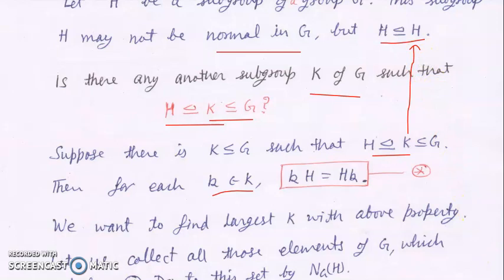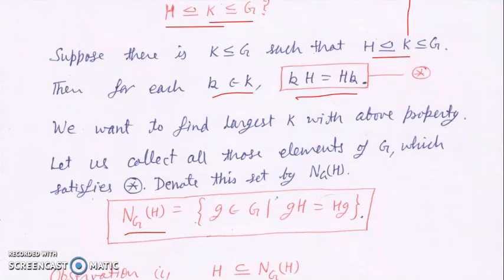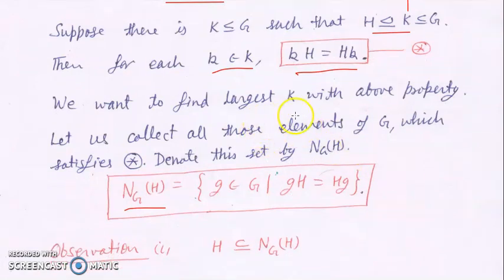We know the smallest one, but we want to know the largest one — which subgroup is the largest subgroup having this property? That subgroup is called the normalizer. If there is such a largest subgroup, its elements satisfy this equation gH = Hg. So we collect all those elements of G which satisfy this equation.